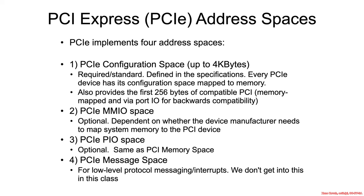PCIe does actually have four address spaces instead of three, but we're not going to get into the fourth one. It's basically the same as PCI in that it has the configuration address space, but now it's been extended to four kilobytes instead of 256 bytes. That extra space is unique in that you can only access it via memory mapped IO. The first 256 bytes you can use either memory mapped IO or port IO, but the last bytes you can only access through memory mapped IO.